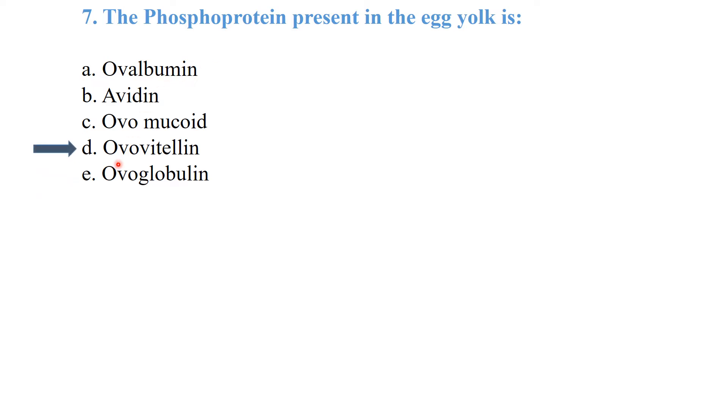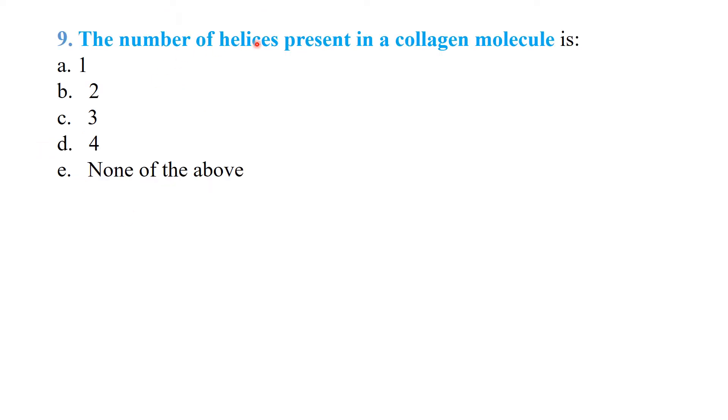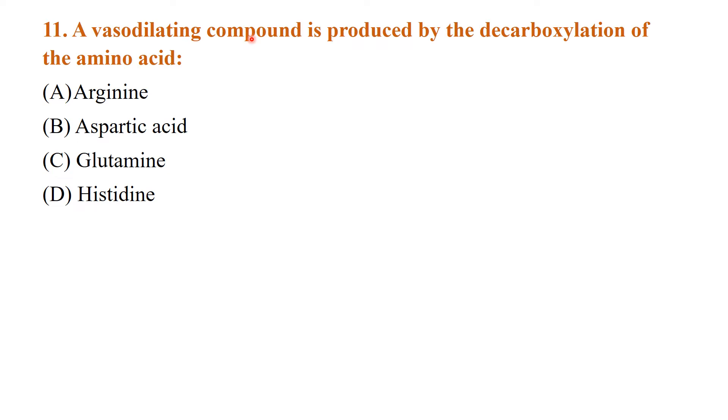All of the following are sulfur-containing amino acids found in protein except threonine, which has no sulfur. The number of helices present in the collagen molecule is three. Which bond is present in the primary structure of protein? The peptide bond is present in primary structure of protein.